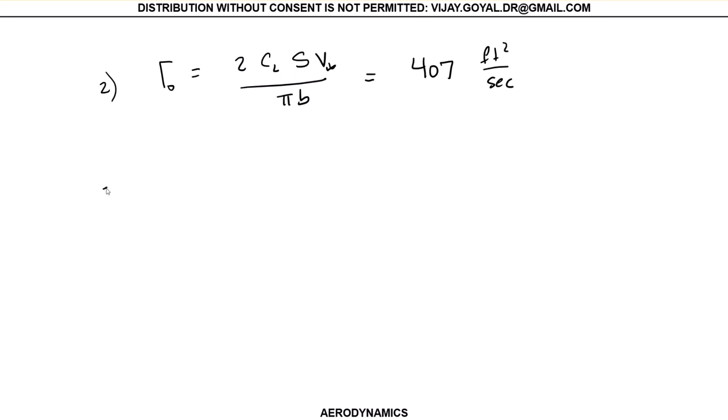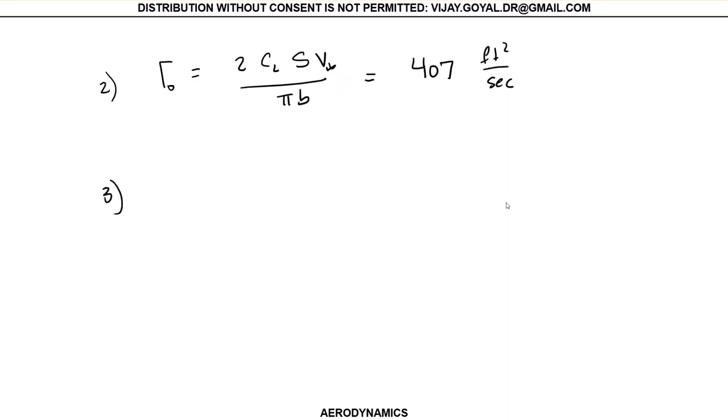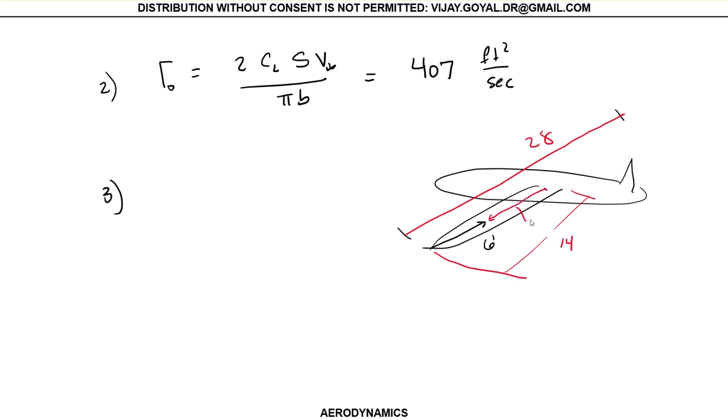Number three: you asked what is the circulation at six feet from the wing tip. I got my airplane, and we want to be from the wing tip six feet. My total wingspan is 28, so from here to here the distance would be 14. So the distance that we're really looking at is y equals 8 feet. Remember everything is measured from the root.